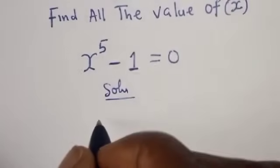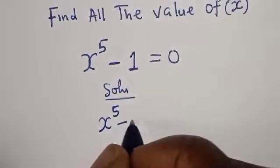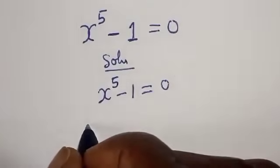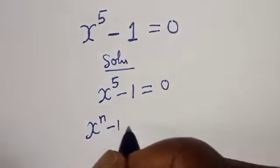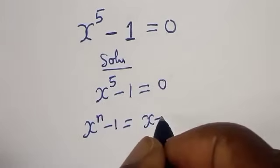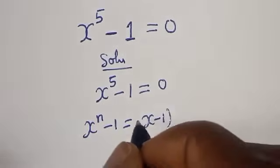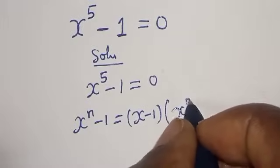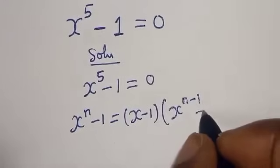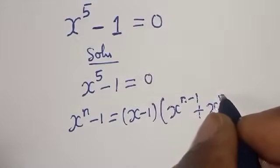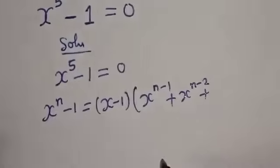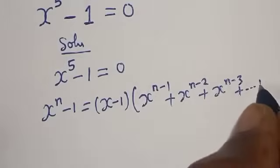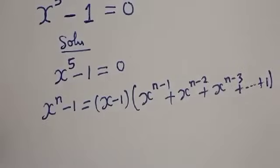We have the given equation x to the power of 5 minus 1 is equal to 0. Now take note of this: if you have x raised to power n minus 1, this is equal to x minus 1, bracket, times x raised to power n minus 1 plus x raised to power n minus 2 plus x raised to power n minus 3, plus ... plus 1.